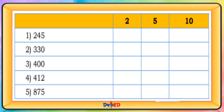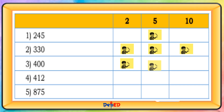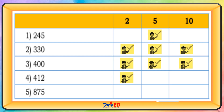245 is divisible by 9. 330 is divisible by 2, 5, and 10. 400 is divisible by 2, 5, and 10. 412 is divisible by 2. 875 is divisible by 9.